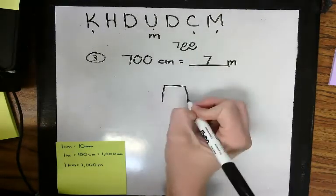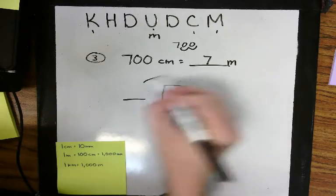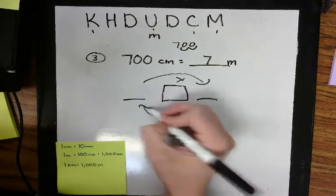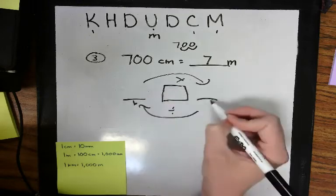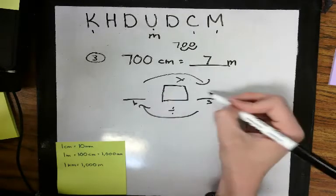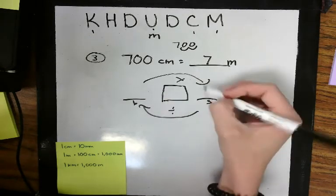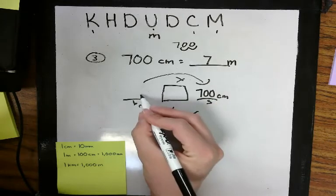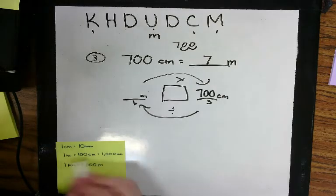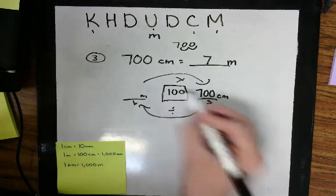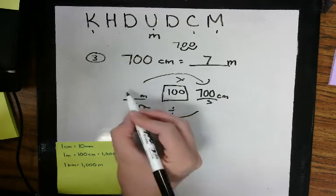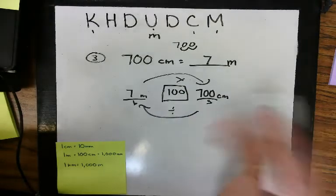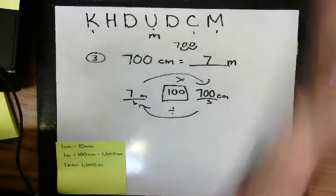That's one way to think about it. Or you can use the conversion calculator. Centimeters are smaller than meters, and there are 100 centimeters in a meter. So we're doing 700 divided by 100, which is 7. Either way works. Whatever makes sense to you, do that.